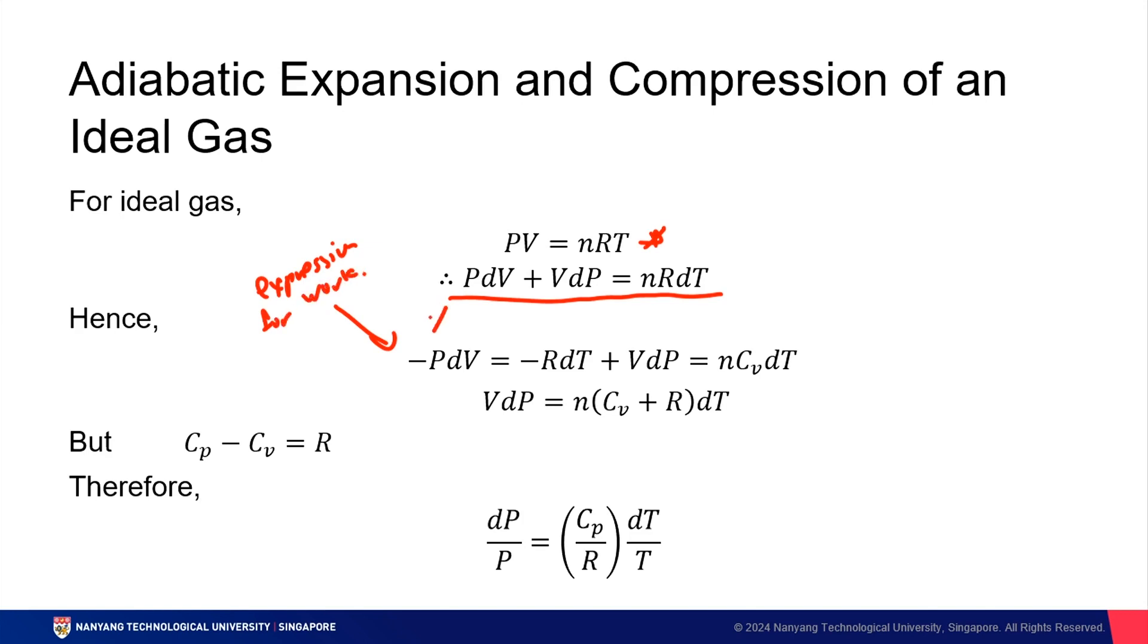Rearranging this to this, we'll get negative PdV equals negative nRdT plus VdP equals nCvdT. Remember a moment ago, what was nCvdT? This was dU. So if we were to take this entire equation over here, we can simplify it further to give us VdP equals n(Cv plus R)dT.